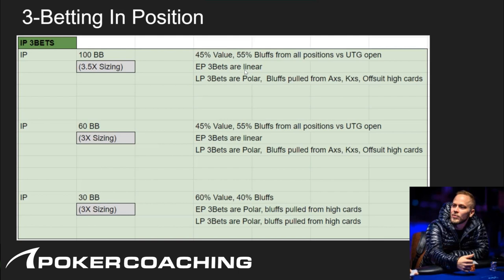At 60 big blinds we're sizing down to 3x, still maintaining roughly 50/50 value-to-bluff ratio. EP three-bets are linear again and LP three-bets are polar, with bluffs pulled from ace-x suited, king-x suited, and offsuit high cards with nice removal. Keep in mind that when three-betting off a 60 or 30 big blind stack, the SPR post-flop is going to be very small, meaning our bluffs don't need to be making flushes and straights.